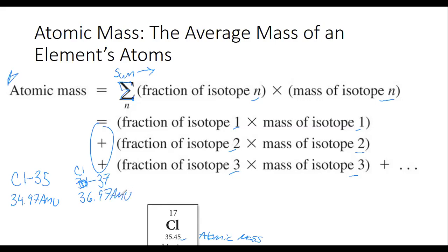To give a practical example, let's look at chlorine. Chlorine has two isotopes — chlorine-35 and chlorine-37. When you weigh these using very advanced scales, chlorine-35 is 34.97 AMU and chlorine-37 is 36.97 AMU. The abundance of chlorine-35 is 75.77% and the abundance of chlorine-37 is 24.23%.